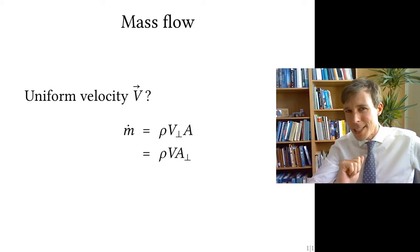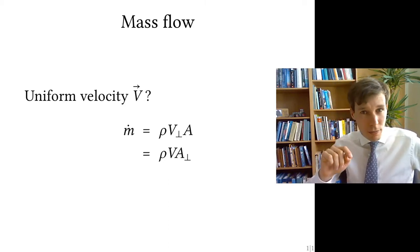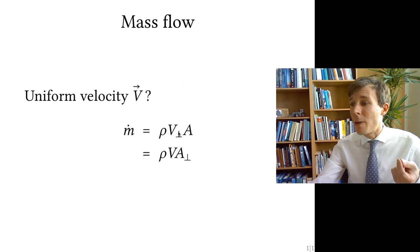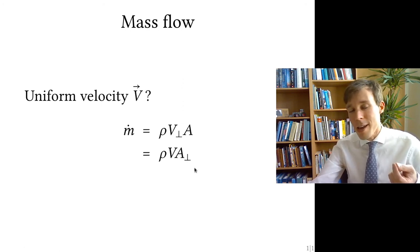In flow mechanics, when we quantify mass flow, we multiply the density rho with the velocity and the area. There's a tiny hack there, which is this perpendicular symbol that we have here, which is applied either on the velocity or on the area.